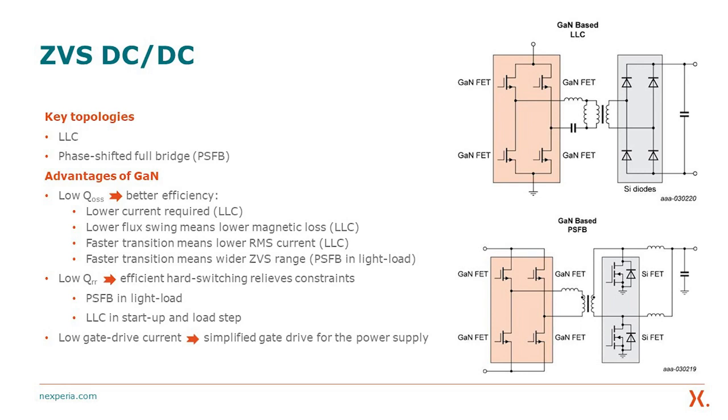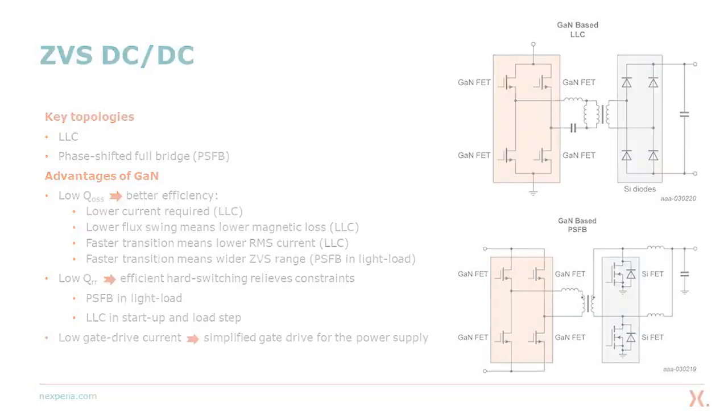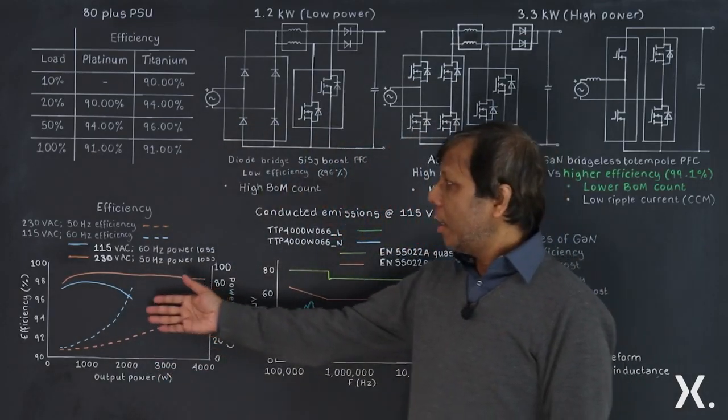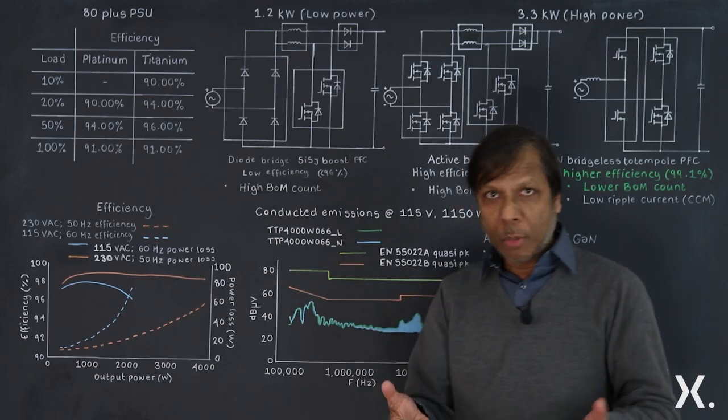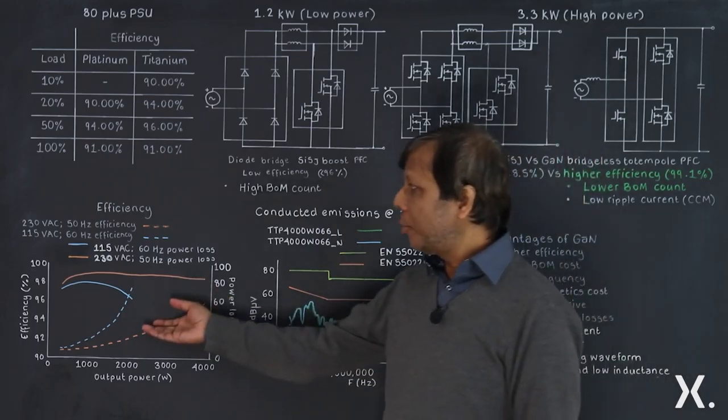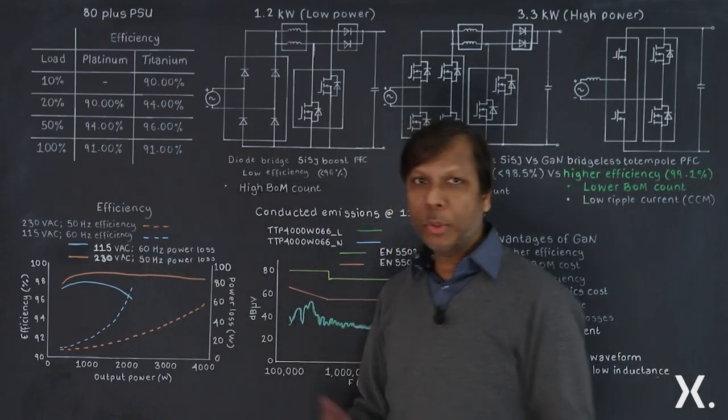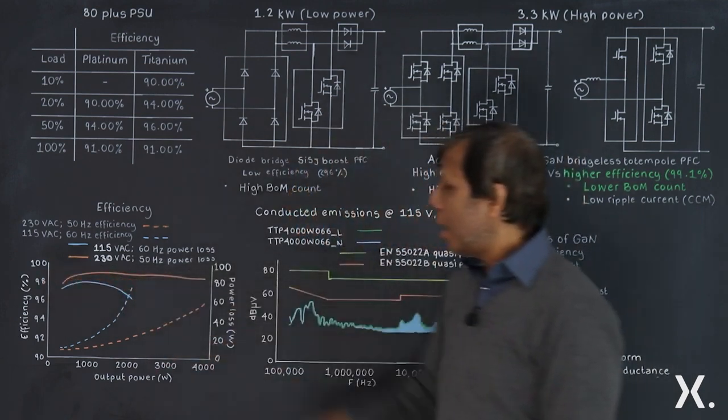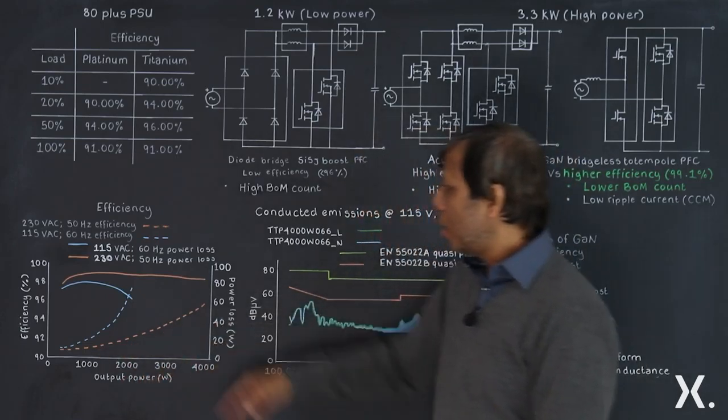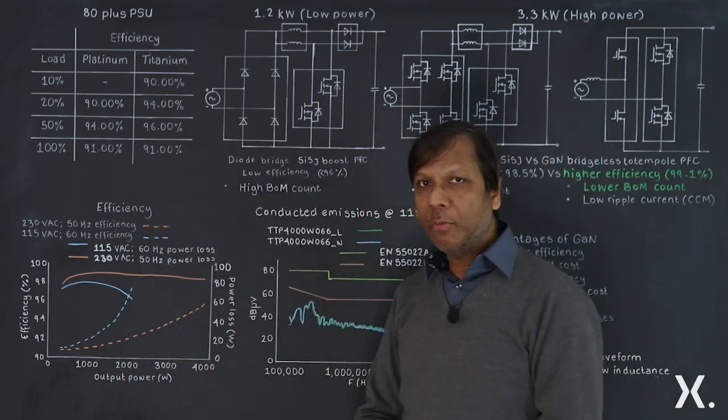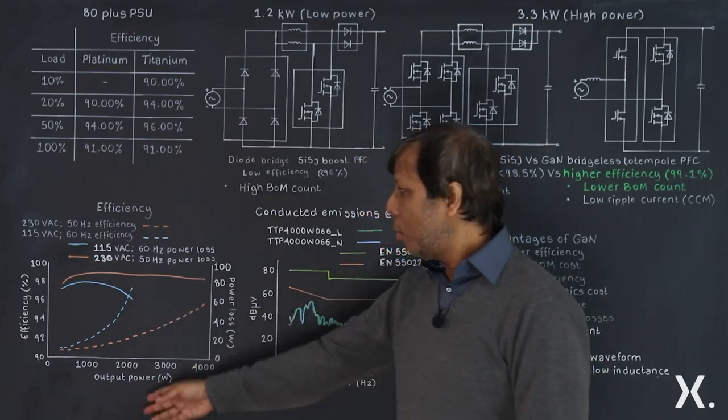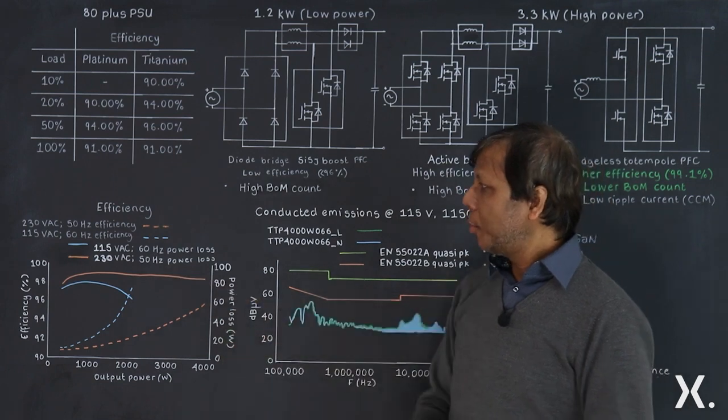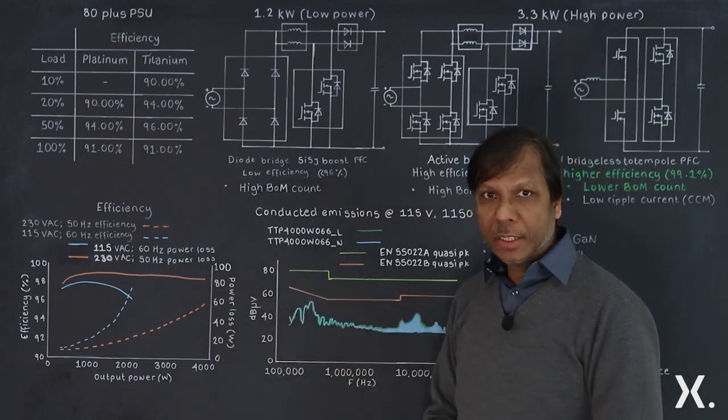Let's look into the efficiency. When we did the totem pole configuration using our power GaN devices, we can see that with 230 volt input and 400 volt output, we can achieve in excess of 99 percent efficiency and much lower power loss. Using 115 volt, we also went up to 2 kilowatt. With 230 volt, we went up to 4 kilowatt and we achieved almost 98 percent efficiency.